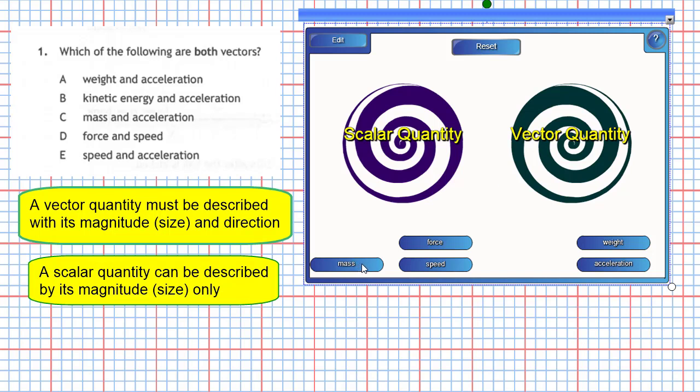Mass likewise only needs a number to describe it. It doesn't need a direction. So mass should fit into the scalar quantity vortex. Correct, mass is a scalar quantity.